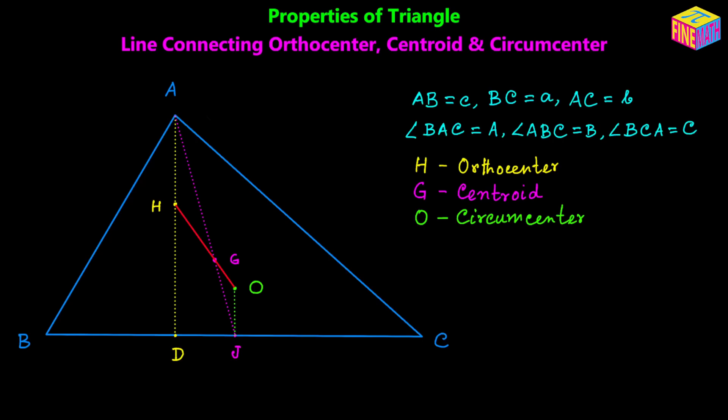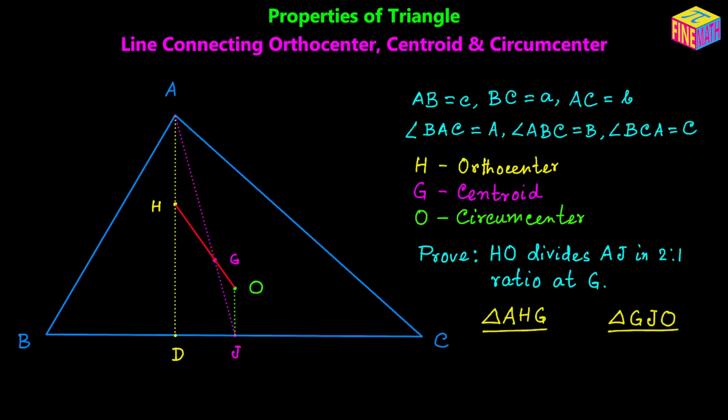H is the orthocenter, G is the centroid, and O is the circumcenter. We are going to prove that the line segment HO divides the median AJ in a 2 to 1 ratio at point G. If we can prove this, then G will clearly lie on the same line as H and O, and that is exactly what we are going to prove now by looking at similarities between two small triangles.